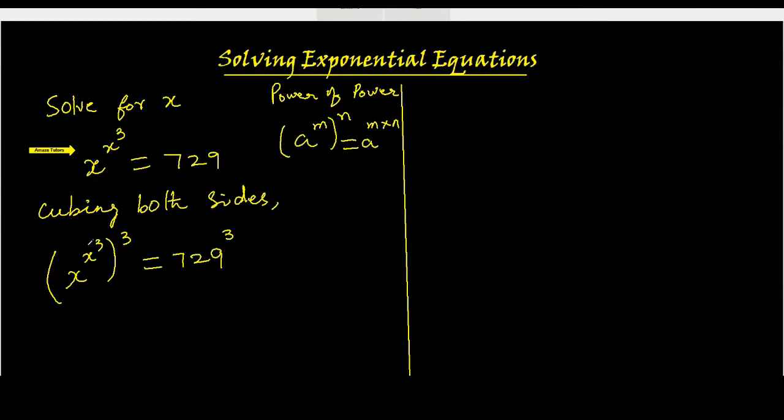According to the property, I need to multiply them, which will become x to the power 3 times x cubed, which is 3x cubed.